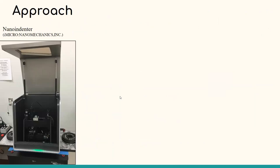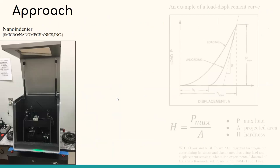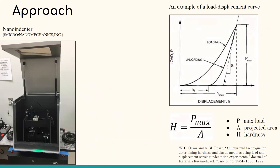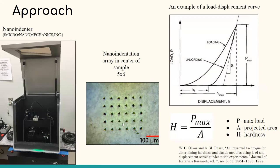Nanoindentation is a superior testing method for mechanical properties on submicron length scales. This is because hardness can be determined from a load displacement curve rather than optically measuring the indentation. Nanoindentation allows surfaces to be mapped with good resolution, and thus a model describing hardness as a function of distance from the free surface can be developed, providing insight into skin and core formation and properties.